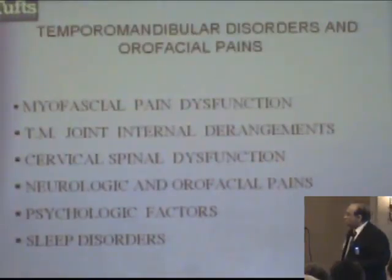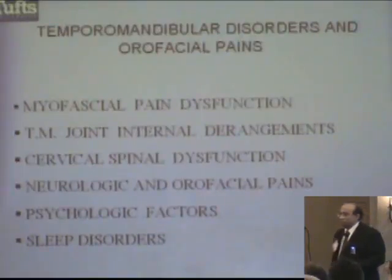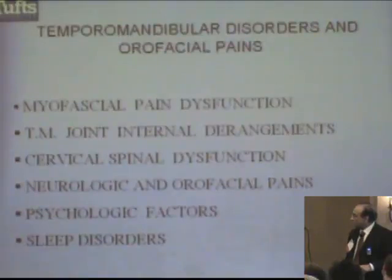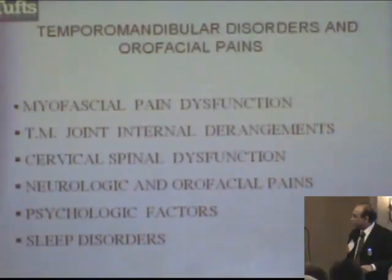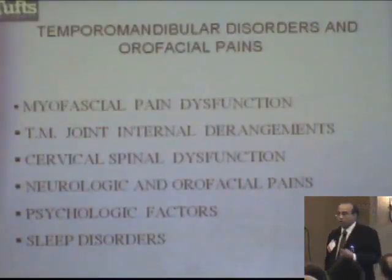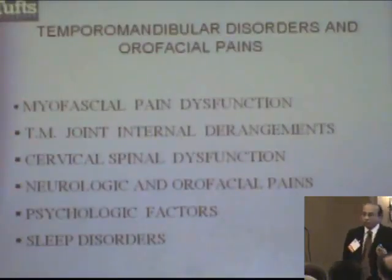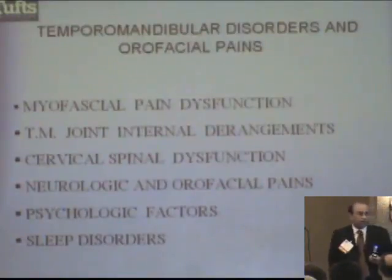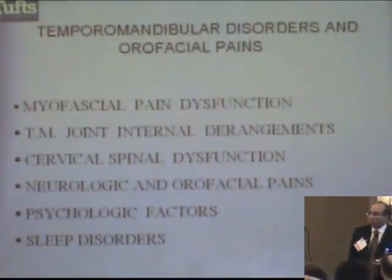Which of these are easiest for us to treat? The first three are probably most affected by what you do in the mouth. The neurologic and orofacial pains can also be affected by what you do in the mouth, but they require some additional treatment. Psychological factors can be affected by what we do in the mouth as well, but they also require additional help. Therefore, it's unusual for a patient in chronic pain across the full body to be treated simply by applying oral therapy by itself. A multidisciplinary approach is probably the best — if not the fastest — way to get people better.